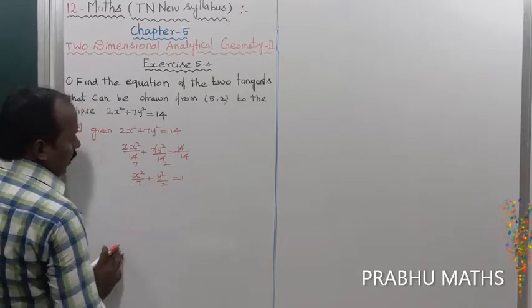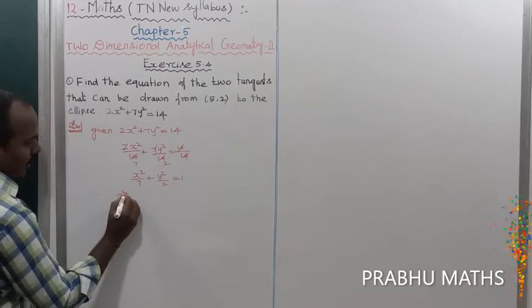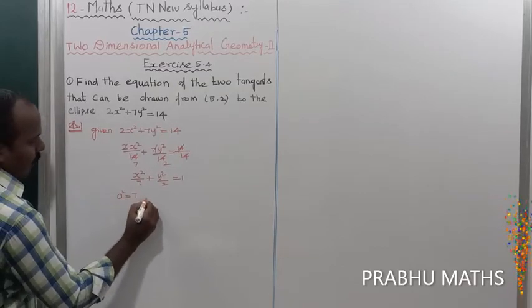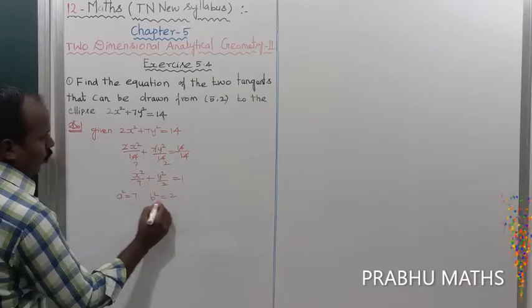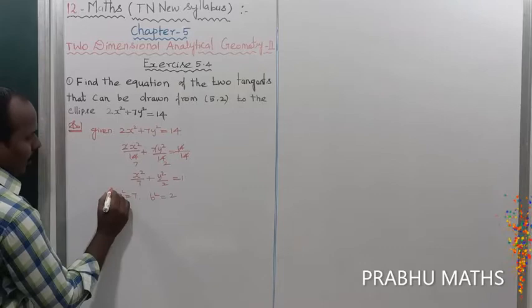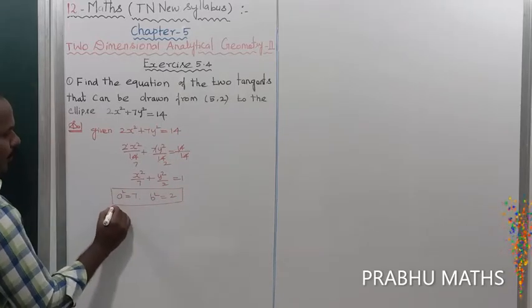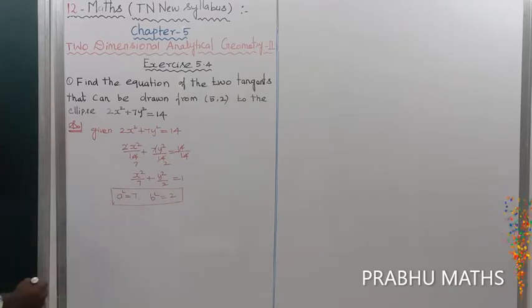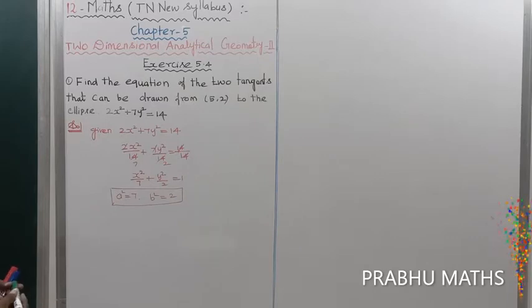From the standard form, a² = 7 and b² = 2. Now we can use these values to find the two tangent equations.